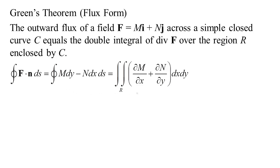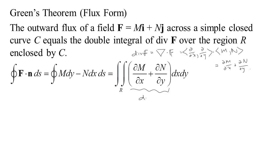Green's Theorem states: the outward flux of a field across a simple closed curve C equals the double integral of the divergence of F over the region R enclosed by C. The divergence of F is del dotted with F. In two dimensions, del is (∂/∂x, ∂/∂y) dotted with (m, n), giving ∂m/∂x + ∂n/∂y. So we're integrating the divergence of F dx dy. This is why it's called the divergence — it measures how much the flow tends to diverge out through the boundary of a tiny box; it's the flux density.